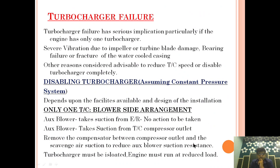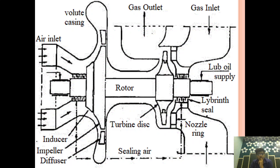It is advisable to reduce turbocharger RPM or disable the turbocharger completely. If you are facing a problem at higher RPM but at lower RPM it is still working, it may be wise to operate the engine at that speed where it is not giving a problem, so you can still provide the engine with the required amount of air for combustion. But if conditions like vibration, bearing temperature, or inlet/outlet temperature of the turbocharger are rising too much beyond normal operating conditions, in that case you should disable the turbocharger.